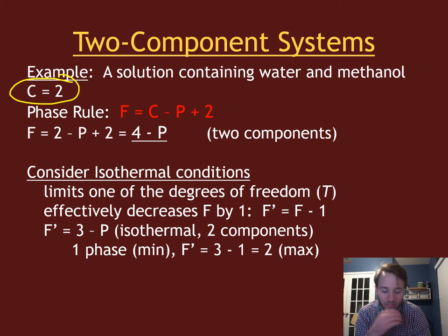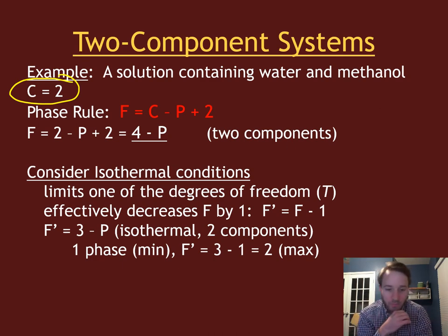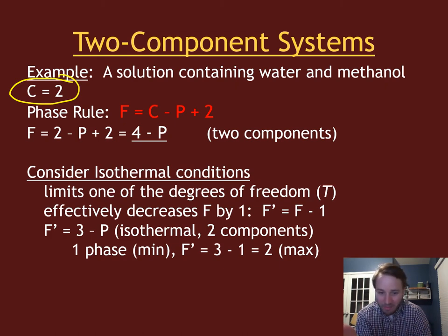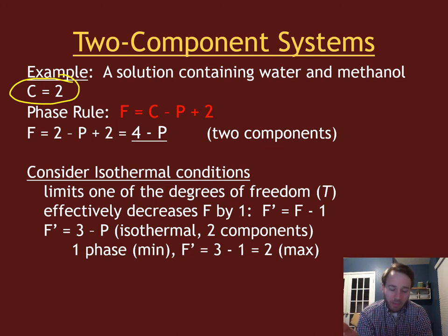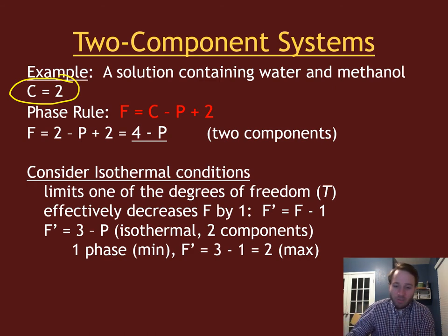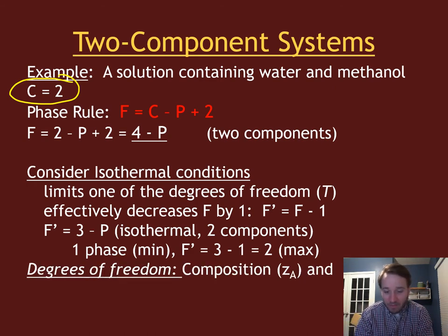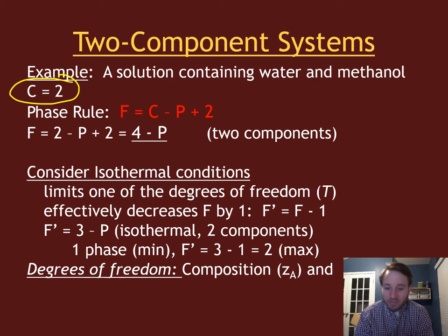This makes our phase diagram look a lot like a single-component phase diagram, where f equals three minus p. For a two-component phase diagram considered isothermally at constant temperature, we can draw a phase diagram that looks like our one-component phase diagrams. The axes are no longer temperature versus pressure since temperature is held constant — now we consider composition versus pressure.